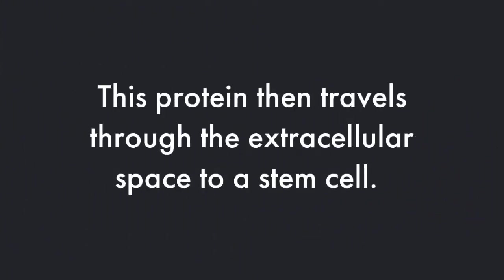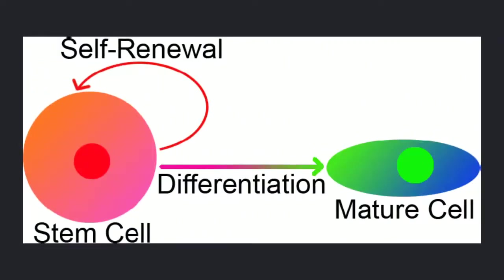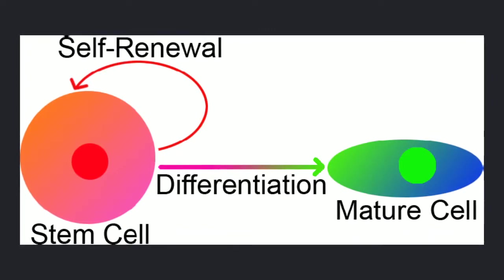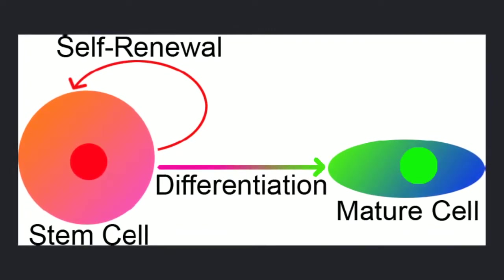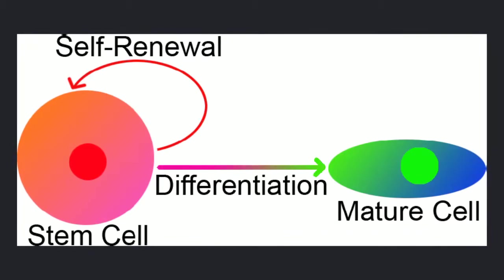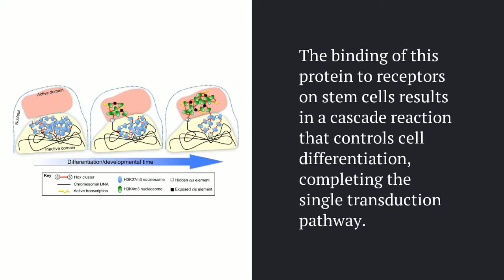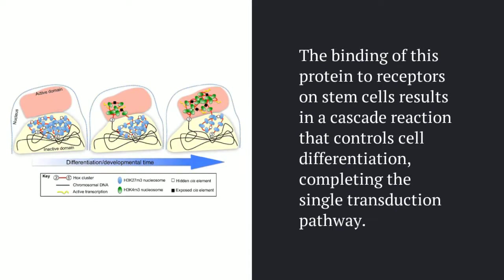After this, the protein can travel out of the cell into the extracellular space and travels to stem cells, which are the cells that the Hox genes control and differentiate. Here's a graphic showing the life cycle of a stem cell — it can either differentiate and turn into a mature cell, which is the job of the Hox gene, or it can self-renew and maintain its stem cell status. When this protein has managed to bind with the stem cell it was targeting, a cascade reaction occurs and we see a signal transduction pathway play out.